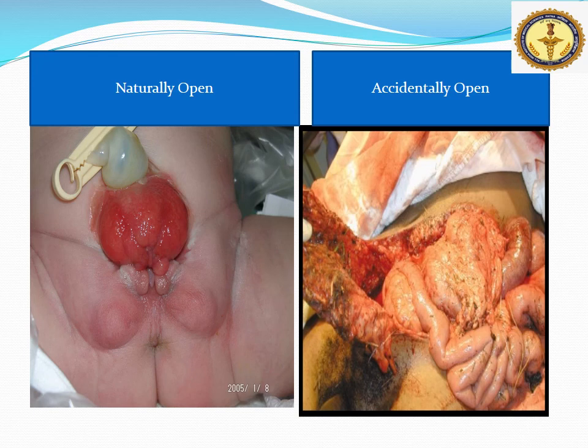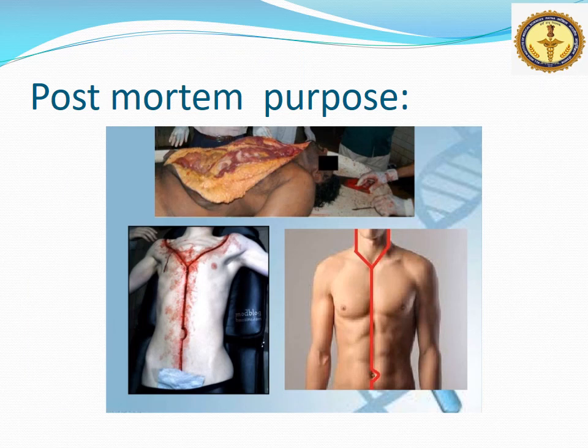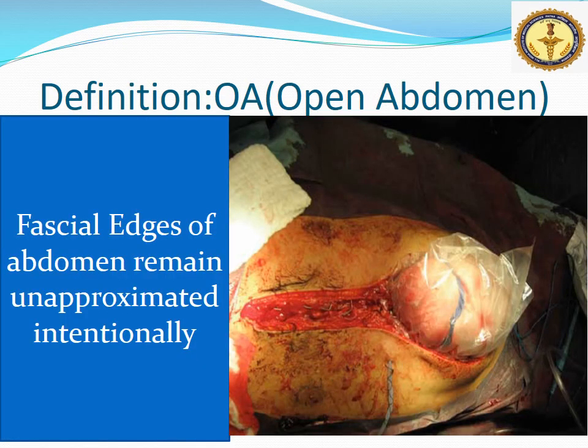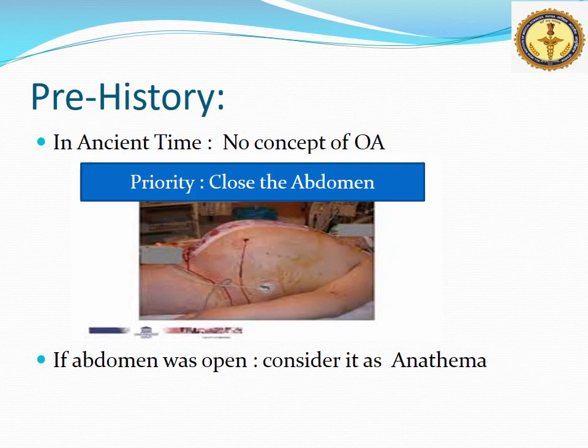You may have seen a naturally open abdomen and an accidentally open abdomen, especially after major trauma. For post-mortem purposes, the abdomen is opened by a specific incision. But the exact definition of open abdomen is when the fascial edges of the abdomen remain unapproximated intentionally. The concept of open abdomen was not in practice in ancient times — the priority was always to close the abdomen, and if the abdomen was open for any reason, it was considered an anathema.